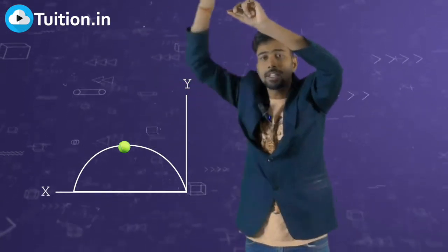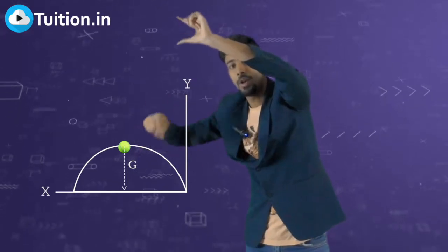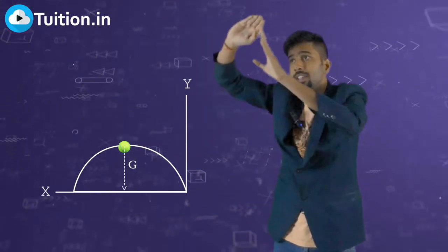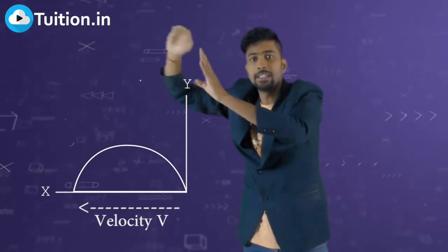After this, your gravity is still acting on the body. So the gravity now starts increasing the Y velocity in the downward direction. This is the reason why your body starts coming downward. But it is still moving with the same velocity in the X direction.